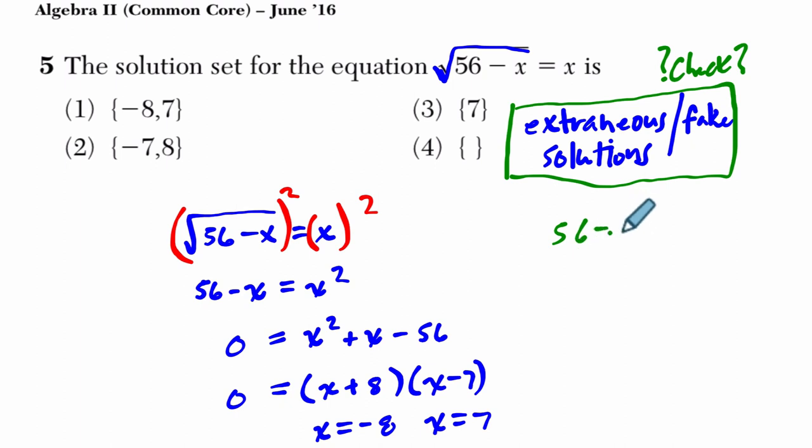√(56 - x) has to equal x. So if we plug in 7, let's test that one first. 56 - 7 is 49. Square root of 49 equals 7. And that's what x equals. That checks out.